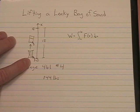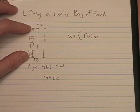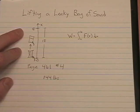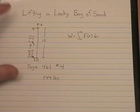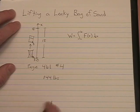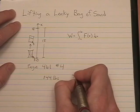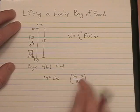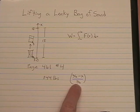Our bag is half full when it gets to 18 feet and since it's leaking at a constant rate, it will be empty at 36 feet. So we can create a proportion like this that tells us for any given distance how much of the sand is left.